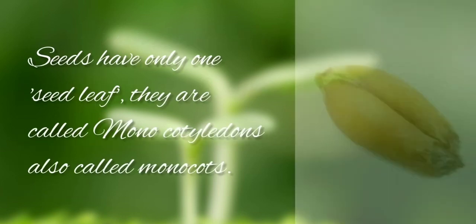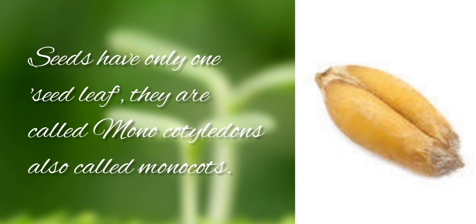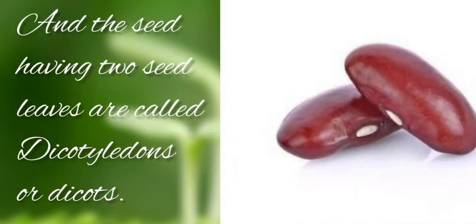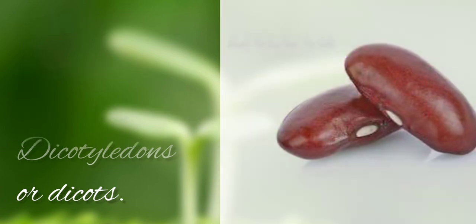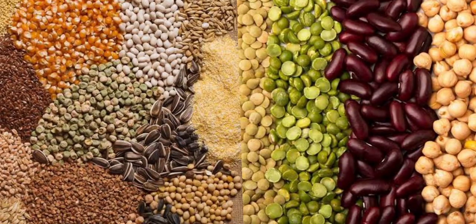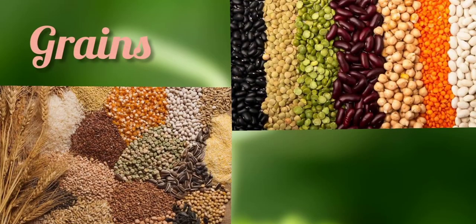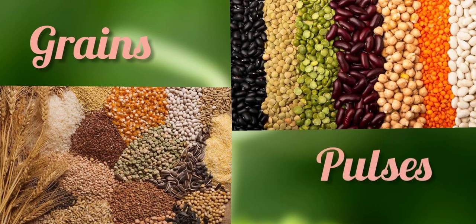Some seeds have only one seed leaf — they are called monocotyledons, also called monocots. Mono means one. Seeds having two seed leaves are called dicotyledons, or dicots — here di means two. All grains are monocots and all pulses are dicots.